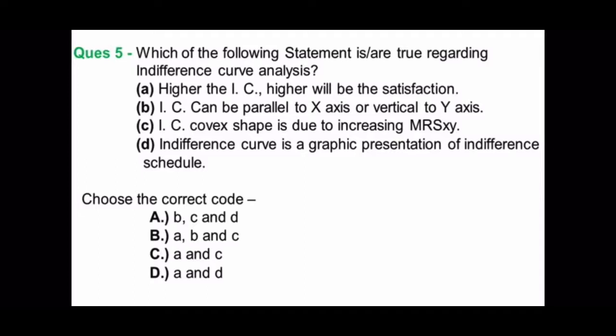Question number 5: Which of the following statement is or are true regarding indifference curve analysis? Option A: Higher the IC, higher the satisfaction - we have also asked in previous question, so that is true. B: IC can be parallel to X or Y axis - this is the property I have discussed, that it cannot be parallel. So B option is false, so in the correct codes which have B, you can remove that option.